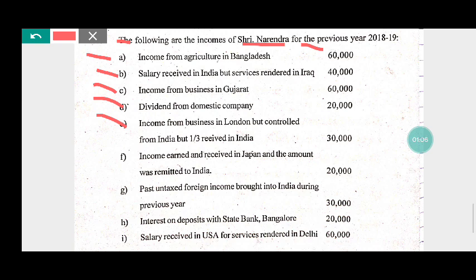Further incomes: income from business in London but controlled from India, one-third received in India. Income earned and received in Japan and then the amount was remitted to India: rupees 20,000. Past untaxed foreign income brought into India during the previous year: rupees 30,000. Interest on deposit with SBI Bengaluru: rupees 20,000. Salary received in USA for services rendered in Delhi: rupees 60,000.